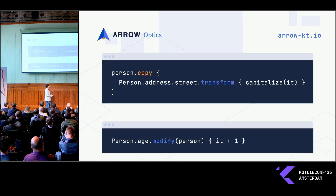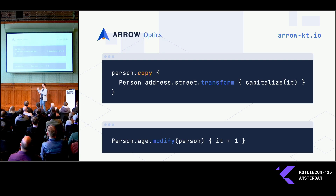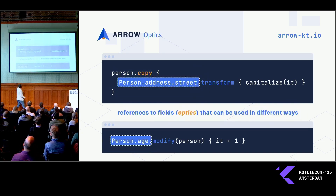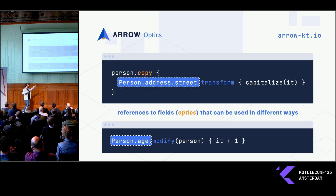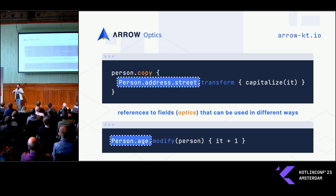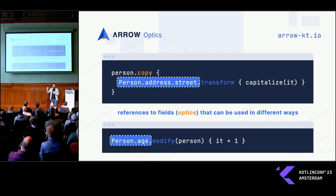The other big line of thinking in solving the mutability problem is arrow optics. Arrow optics kind of tries to look at things from the other side. Instead of having the name of the field you want to change after the person you want to change, we do it in the other order. The idea is that now we have references to fields — these are what we call optics — and by composing those, we can have a nicer syntax.